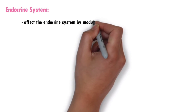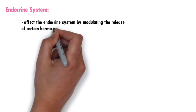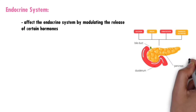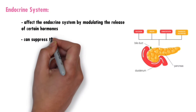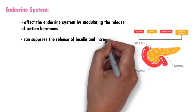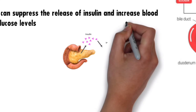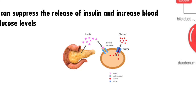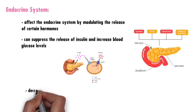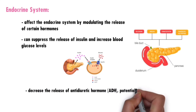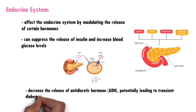Endocrine system: Dexmedetomidine can affect the endocrine system by modulating the release of certain hormones. It can suppress the release of insulin and increase blood glucose levels. Dexmedetomidine may also decrease the release of antidiuretic hormone (ADH), potentially leading to transient diabetes insipidus — a rare disorder that causes the body to make too much urine.